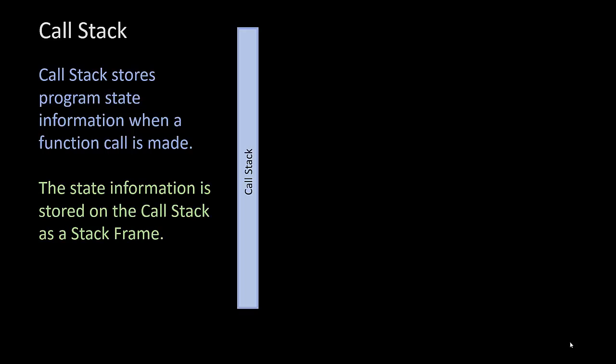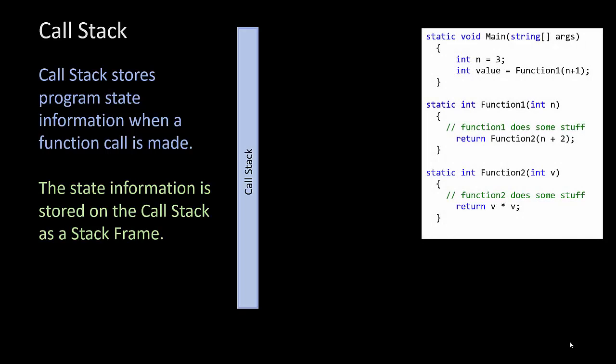How does the function keep track of the current value of n? We use what's called the call stack. To explain it, let's first use a non-recursive example, then show it again with the recursive version. The call stack stores program state information whenever you make a function call. What you store on the call stack is called a stack frame, which contains all local variables and where the function was called from, so that when it returns, the program knows where to go back to. A stack is a data structure where the last item pushed on is the first one off — last in, first out. Here's a simple program with a main function and a couple of function calls.